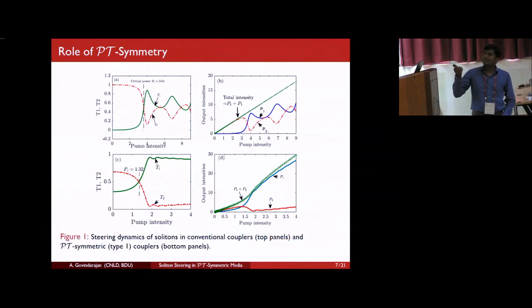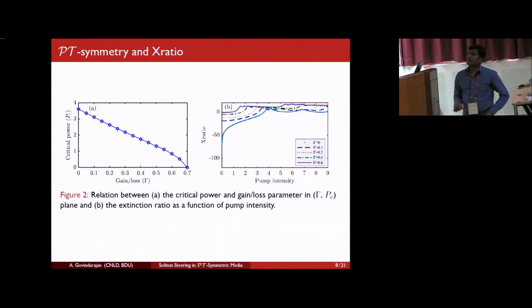First, we study the role of PT-symmetry without considering the quintic nonlinearity. Here and in forthcoming slides, the top panels correspond to conventional couplers, whereas the bottom panels correspond to the PT-symmetric fiber couplers. As you may note that as first notable effect, the critical power needed to steer the soliton pulses between the two waveguides have been dramatically reduced from 3.61 to 1.32. And also you can observe that the oscillating curves, which are completely unwanted, has been completely removed by the PT-symmetry effect. Moreover, the transmission efficiency is fairly increased from, note this here, almost 0.6, but in PT-symmetric fiber couplers, it almost reaches to 1.